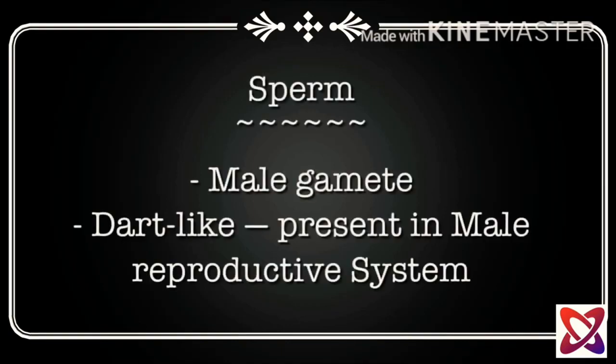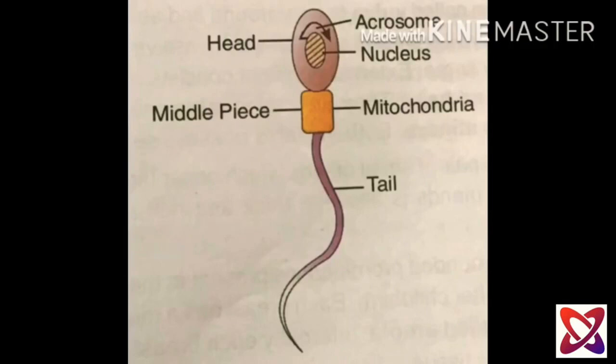Now let's move to our last subtopic, which is sperm. Sperm is the male gamete present in the male reproductive system. Here is the diagram of sperm: at the top, the oval part is the head, which contains the acrosome and nucleus. In the middle is the middle piece, which contains mitochondria. At the end is the tail of the sperm.